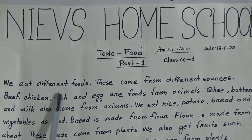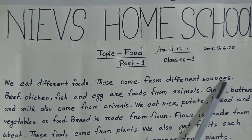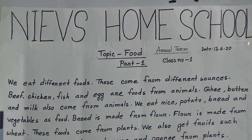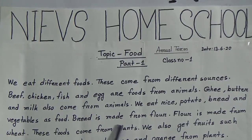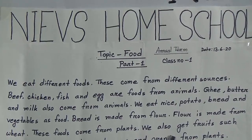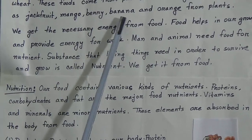We eat different fruits that come from different sources. Beef, chicken, fish, and egg are foods from animals. Ghee, butter, and milk also come from animals. We eat rice, potato, bread, and vegetables as food. Bread is made from flour, and flour is made from wheat. These foods come from plants.